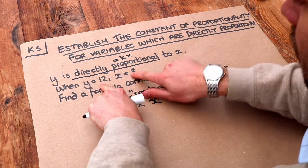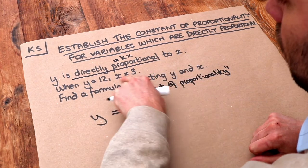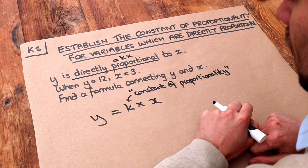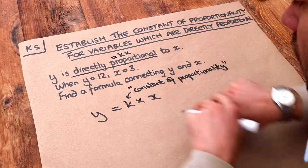Now if you have some values given, then we can work out what that k is. So we're told that if x was 3 then y would be 12. So let's just substitute those values into this equation.